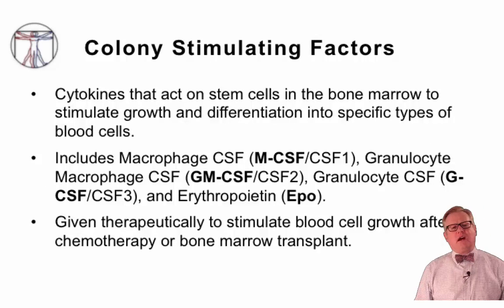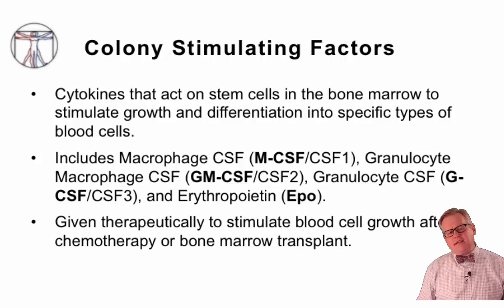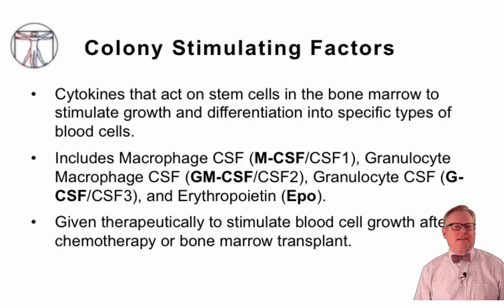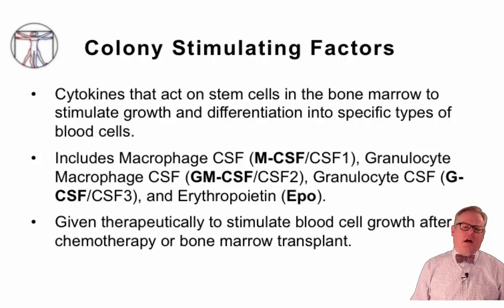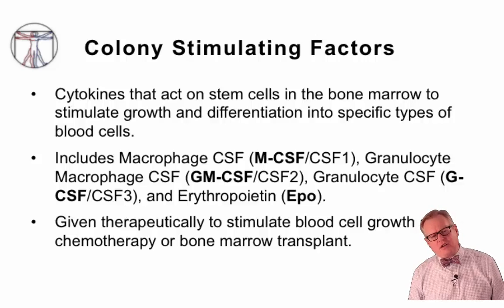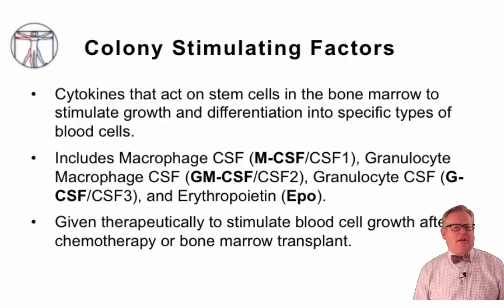The colony stimulating factor family of cytokines act on stem cells in the bone marrow to stimulate growth and differentiation into specific types of blood cells. Among these are macrophage colony stimulating factor and granulocyte macrophage colony stimulating factor.